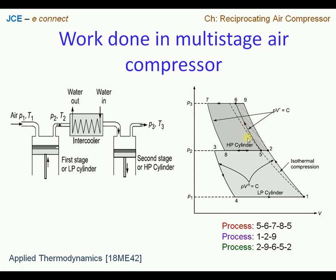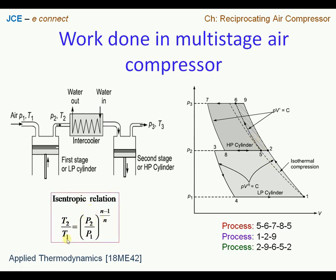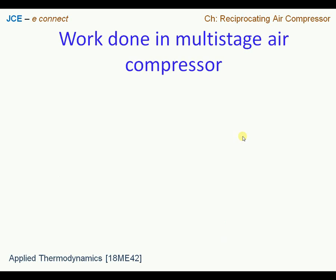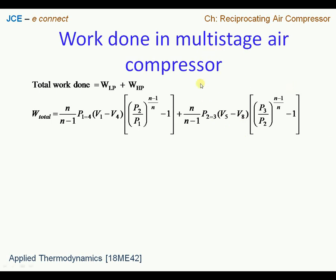The typical temperatures at the end of compression at each stage can be worked out using isentropic relations. T2 by T1 corresponds to the first stage cylinder, and T6 by T5 corresponds to the compression process for the high pressure cylinder or stage two. The total work input to the compressor is the sum of the work input by the low pressure cylinder and the work input by the high pressure cylinder.